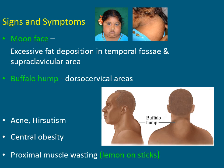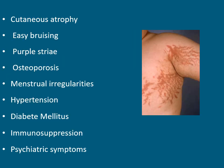Other signs and symptoms are acne, hirsutism, central obesity, and proximal muscle wasting. Hirsutism is excess growth of hair. Additional signs and symptoms include cutaneous atrophy, easy bruising, purple striae, osteoporosis, menstrual irregularities, hypertension, diabetes, immunosuppression, and psychiatric symptoms. These are all seen in Cushing's disease patients.